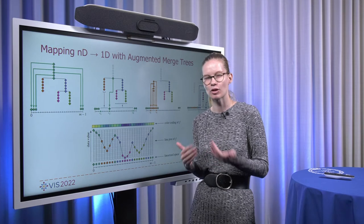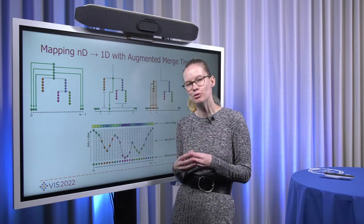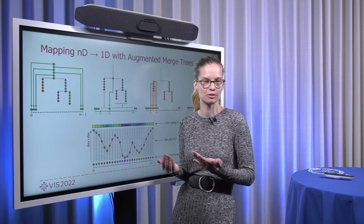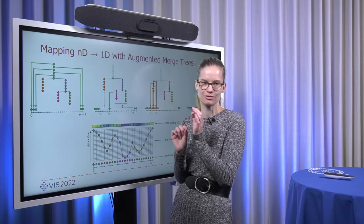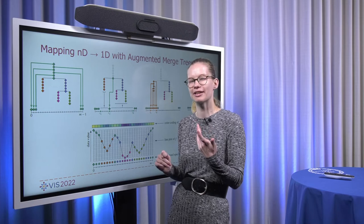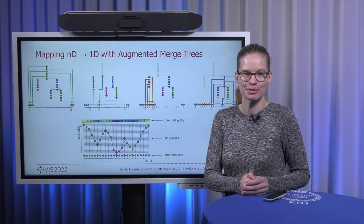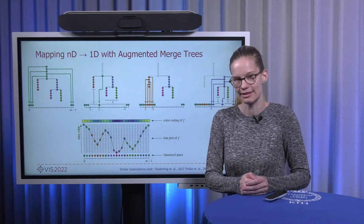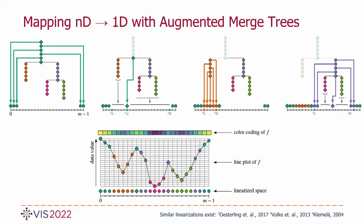And that means we have created a 1D mapping with again the same merge tree. There are some intricacies with that. For example, multisaddles cannot be accurately represented in this 1D representation simply because each point has only two neighbors. That means merging behavior of more than two components is simply not possible. But this kind of mapping essentially just splits a multisaddle into two consecutive saddles. And that's a common way to handle multisaddles anyways. Note that we aren't the first one to make this observation that a tree can be used to linearize data, creating a 1D representation that has the same tree as a tree in n dimensions. For example, Oesterling et al., Volker et al., and Chimea all created similar 1D representations like ours here as well.